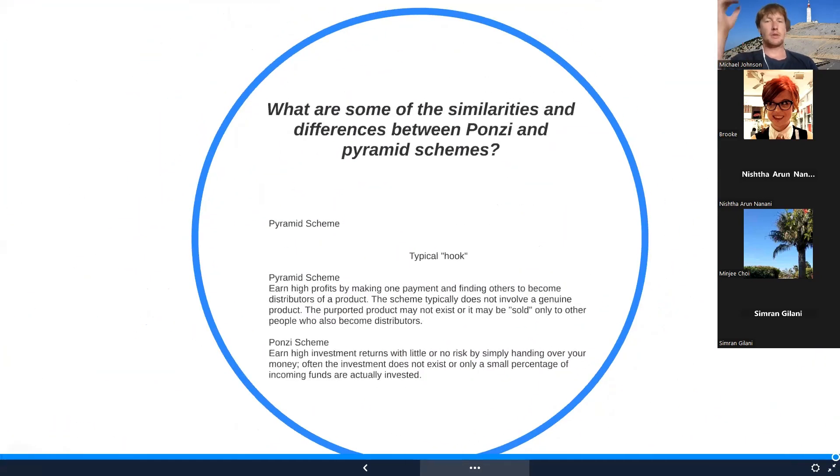And then what are some of the similarities and differences between Ponzi and pyramid schemes? So pyramid scheme is a typical hook: earn high profits by making one payment and finding others to become distributors of a product. The scheme typically does not involve a genuine product. The purported product may not exist or may be sold only to other people who also become distributors. So how the pyramid scheme works is that if you join one, they make all their money on recruitment. So they have to recruit new people to make money. And that's the only way they make money.